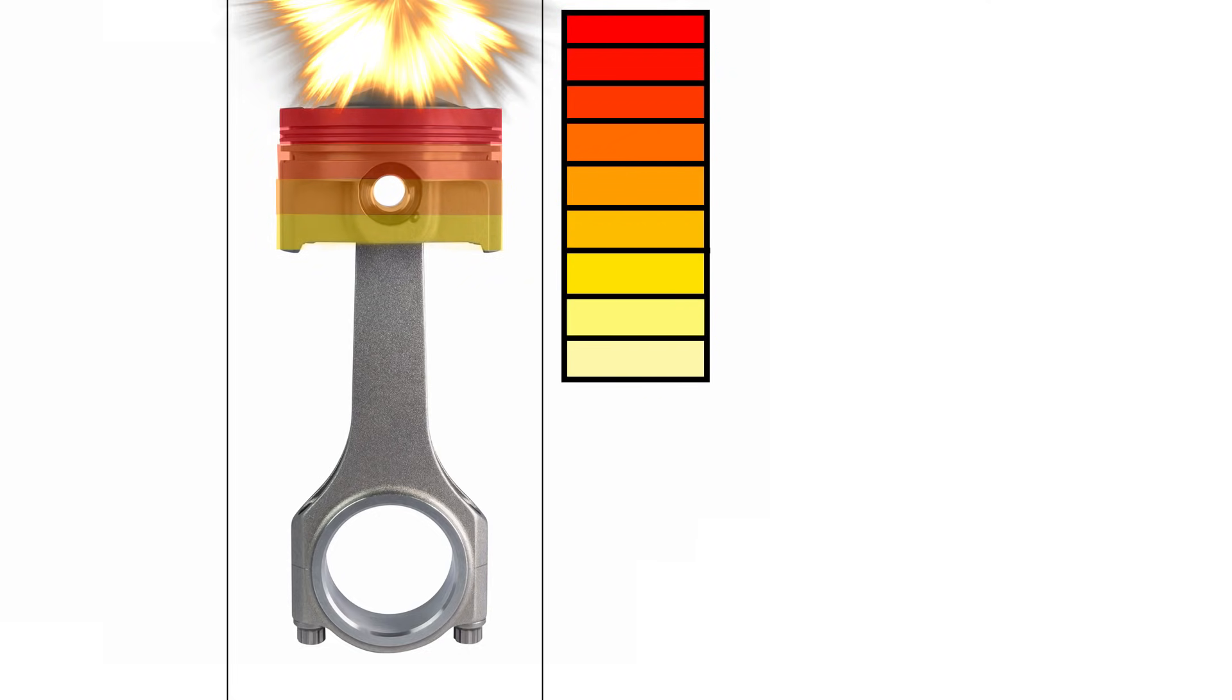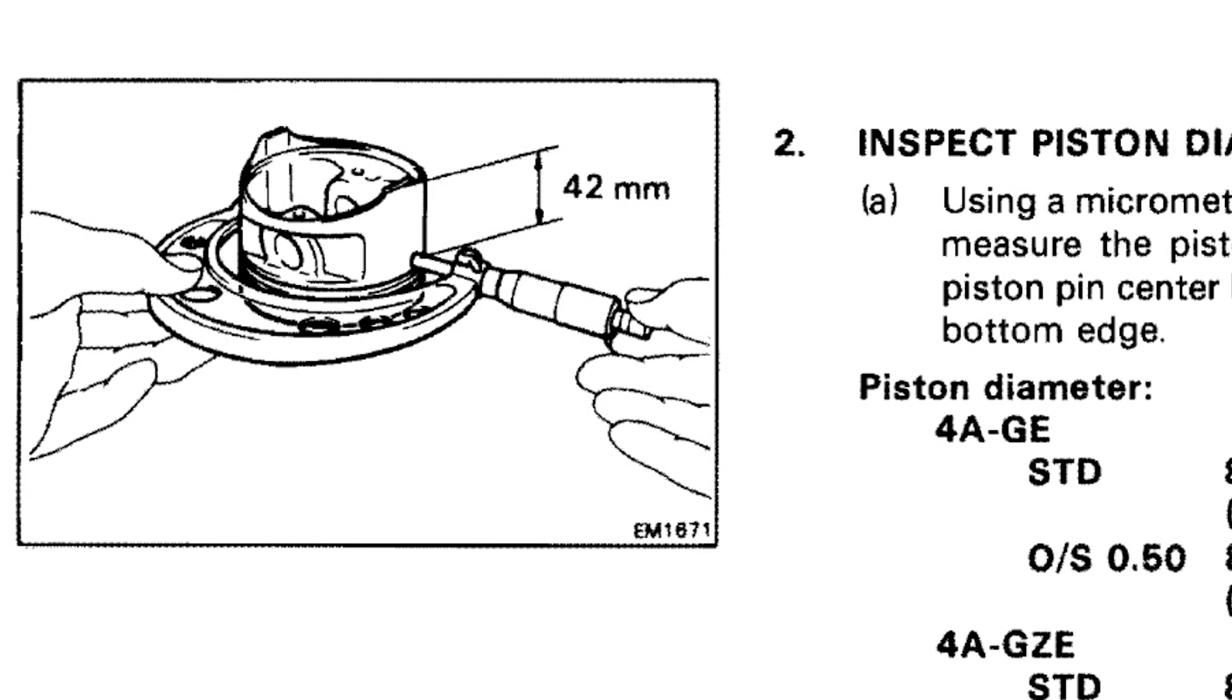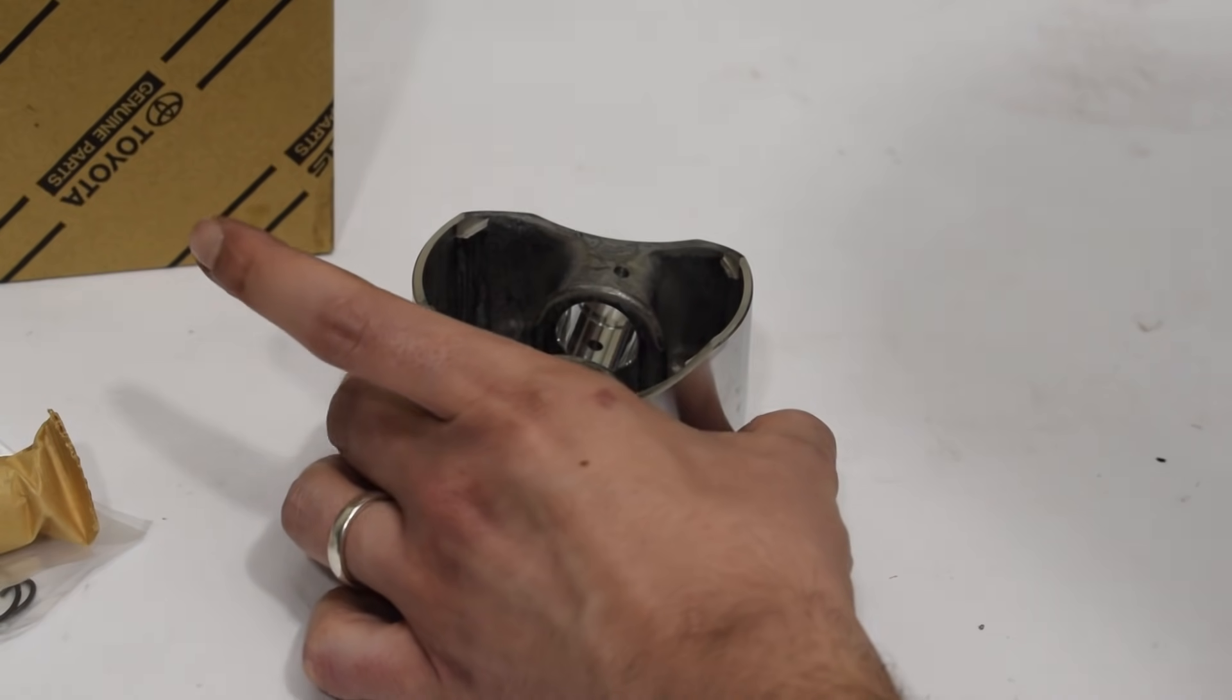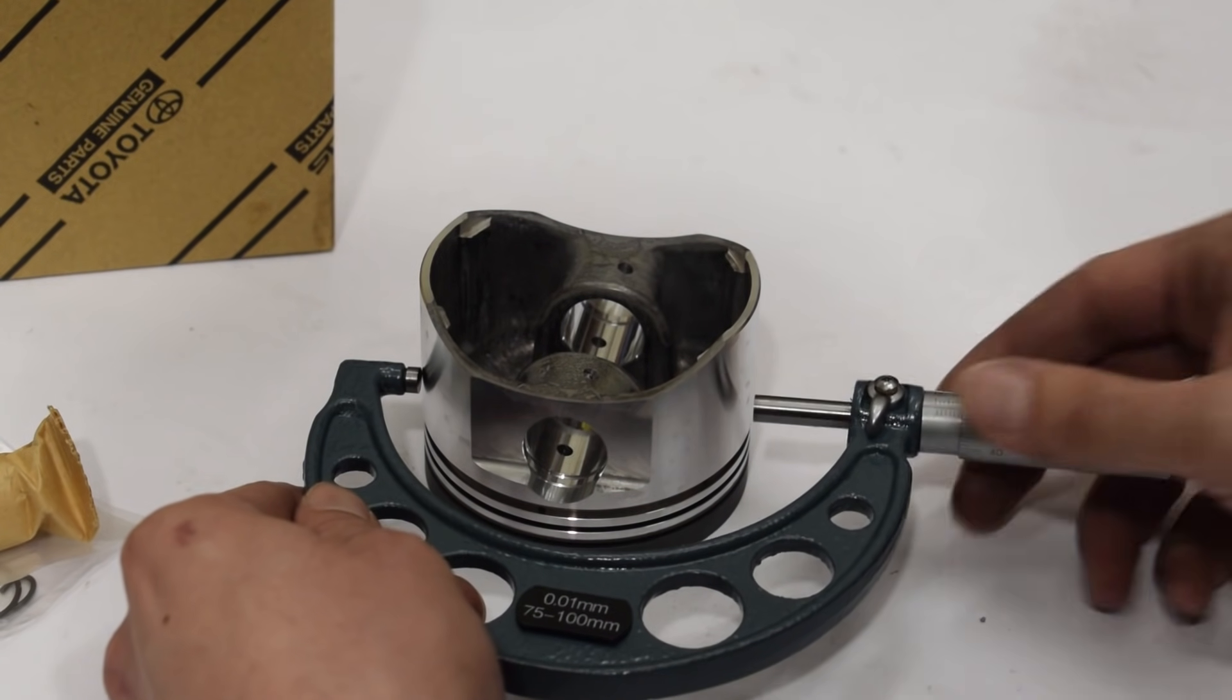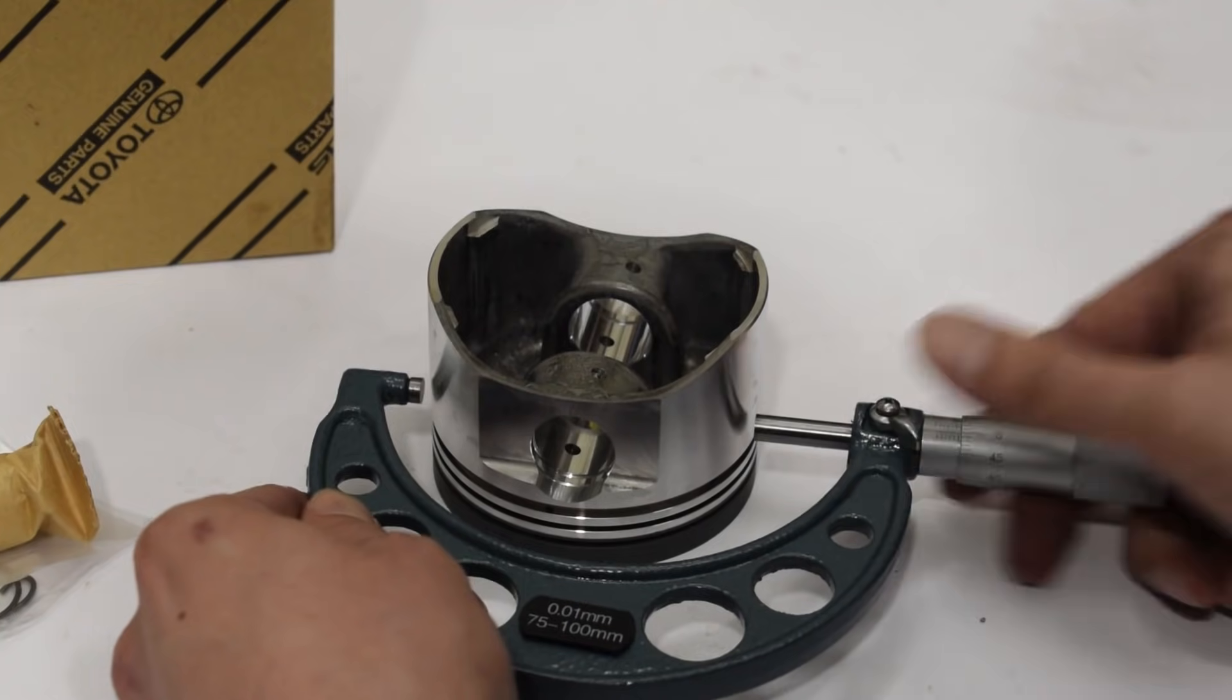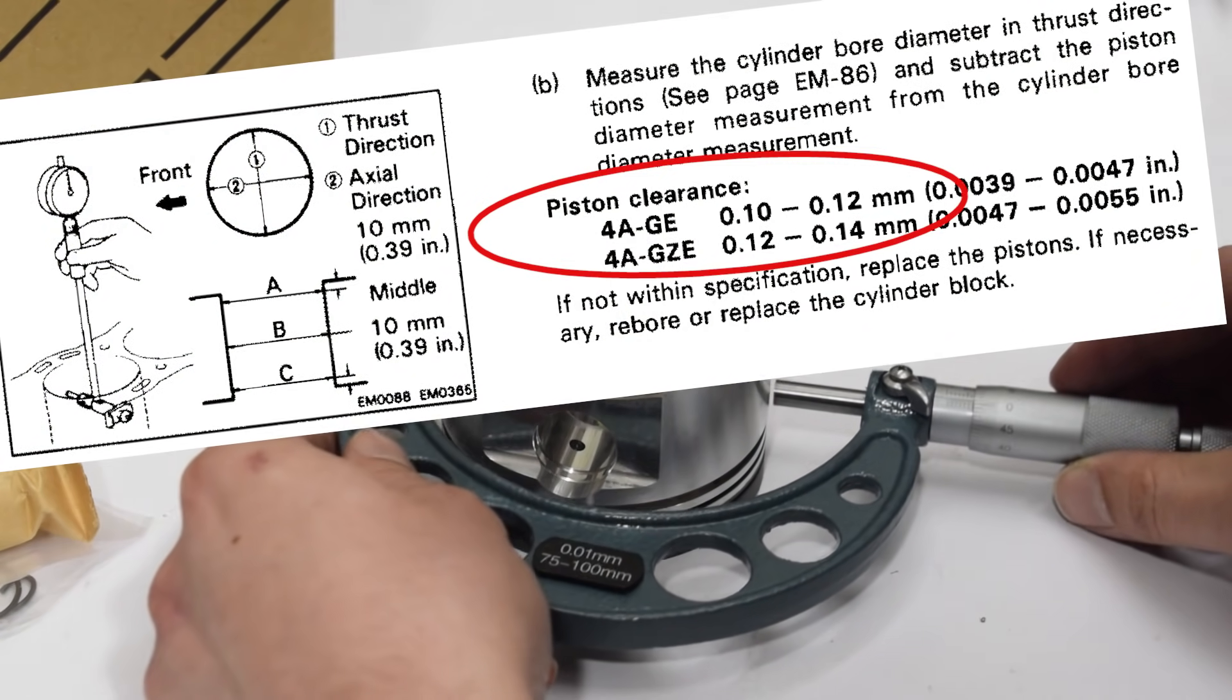If we check our factory service manual, we'll see that the piston is measured on the thrust side 42mm from the skirt bottom, which turns out to be just a few millimeters away from the oil ring groove. This is a slightly unusual measurement spot as most others measure closer to the bottom of the skirt. This is why many machine shops would be surprised by this piston to wall clearance if you didn't tell them where the piston needs to be measured.